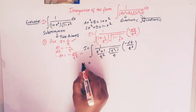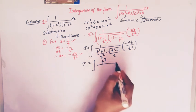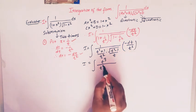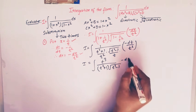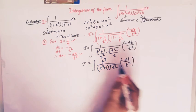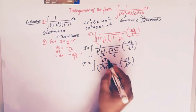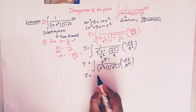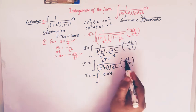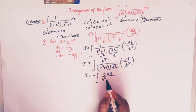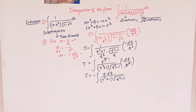Now let us further simplify. t² times t gives t³ in the numerator. After simplification we have t³ in the numerator and (t² + 1)·√(t² − 1) in the denominator, multiplied by −dt/t². The t² and t² cancel, leaving t¹. Taking the negative sign outside, we get: I = −∫ t dt / [(t² + 1)·√(t² − 1)].